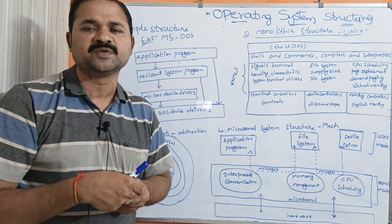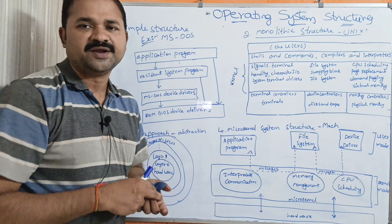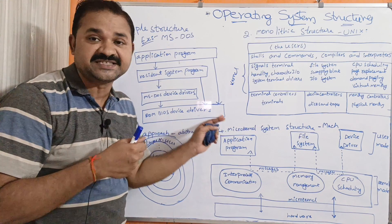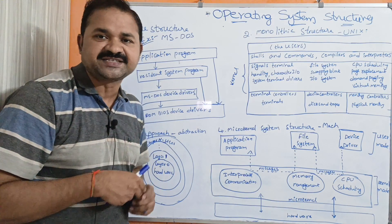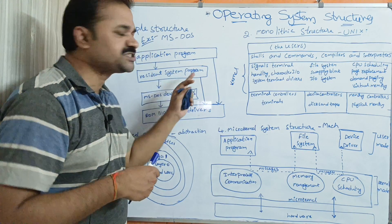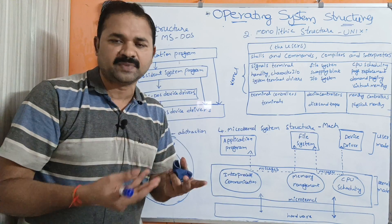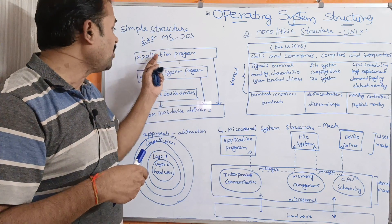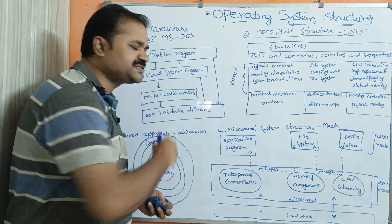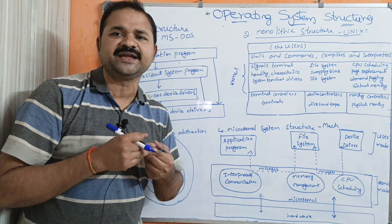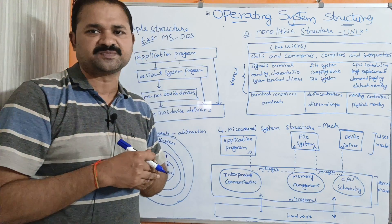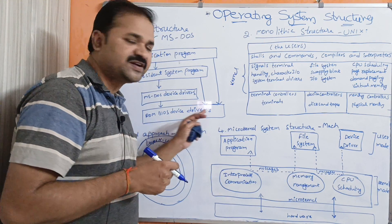After executing one program, the CPU can start executing another. In the MS-DOS diagram, the bottom layer is ROM BIOS device drivers, which represents hardware. On top of this we have MS-DOS device drivers, then the resident system program — the most commonly used being the operating system — and on top of that we have the application program. Any computer mainly contains four components: hardware at the bottom, then the operating system, then application programs.